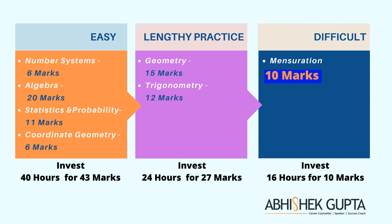For your benefit, I'm dividing these seven units into easy, difficult, and those requiring more practice. The easy chapters are number systems, algebra, statistics and probability, and coordinate geometry. Assuming you are spending 80 hours of study for 80 marks, you should ideally spend about 40 hours on these four units because by doing so you will be able to complete 52.5% of your marking scheme. Maths is a scoring subject — to score well on paper is different from being good in class. You need to be a good test taker.